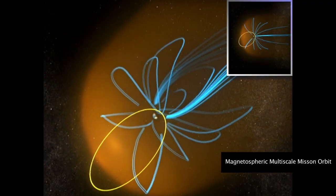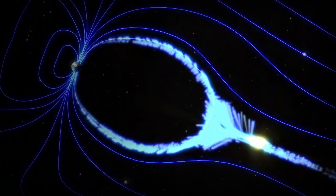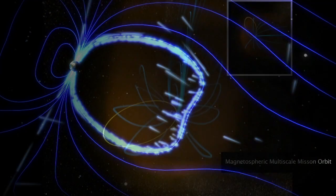As it crosses the magnetopause, MMS will take high-speed snapshots of the magnetic explosions as they unfold.